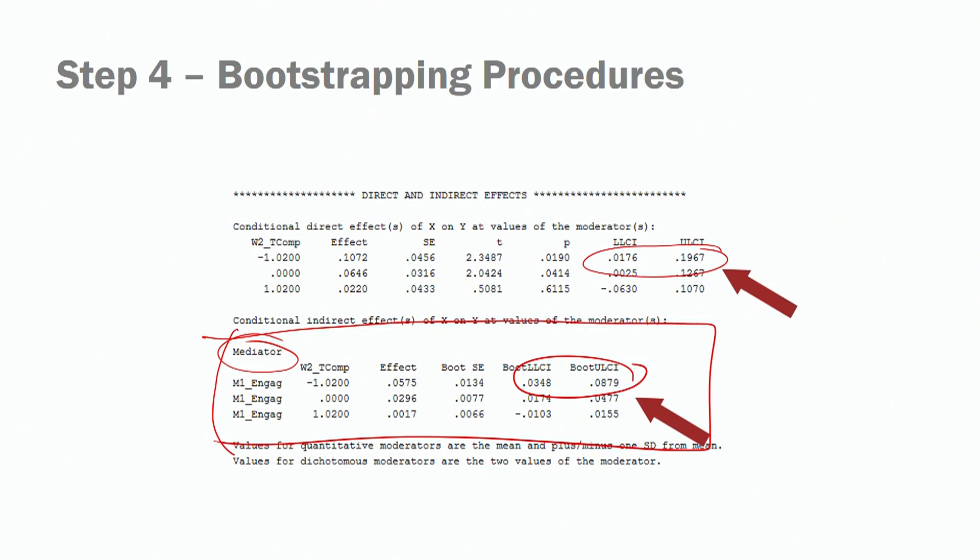So if task complexity is high, we can't actually perform well regardless of our engagement level or how meaningful the job is. I don't have a strong theoretical rationale here since the purpose of this workshop is to teach you how to conduct conditional indirect effect analysis, but vaguely that is the reasoning. Meaningfulness has an indirect effect on job performance via engagement when task complexity is low.